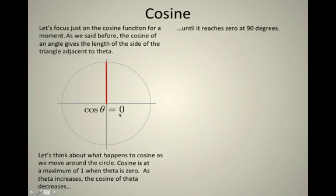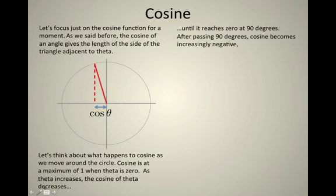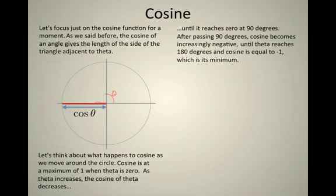We can keep letting theta get bigger, and as theta gets bigger, now the adjacent side is over here, and cosine theta actually just got negative. And as theta gets bigger and bigger, cosine theta gets larger in magnitude, although it's moving further over to the left. When theta is 180 degrees, cosine theta is equal to minus 1. So actually, cosine theta got smaller and smaller, went through 0, and then got smaller and smaller, went all the way down to minus 1.